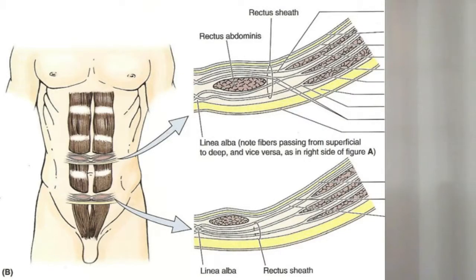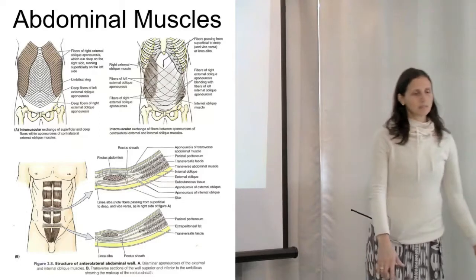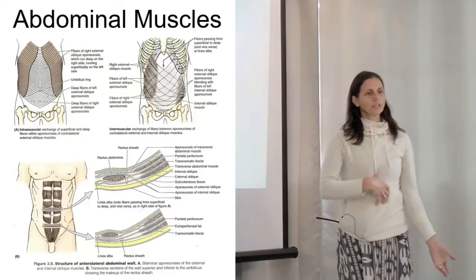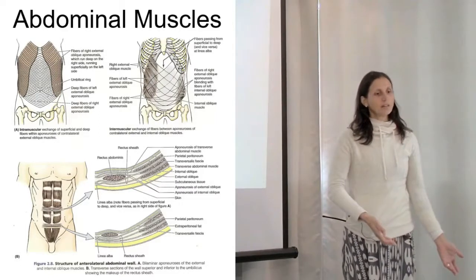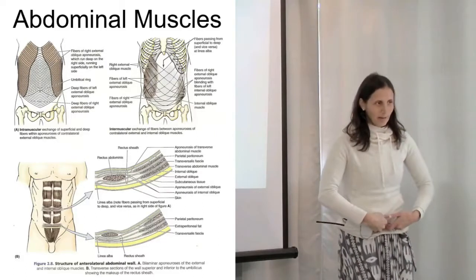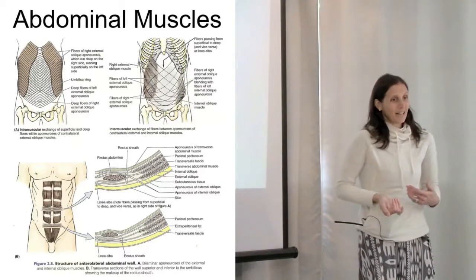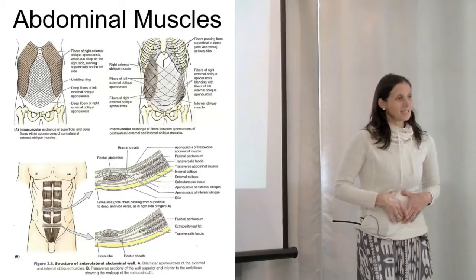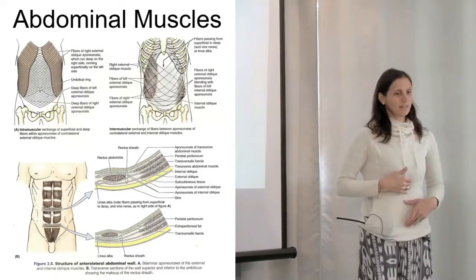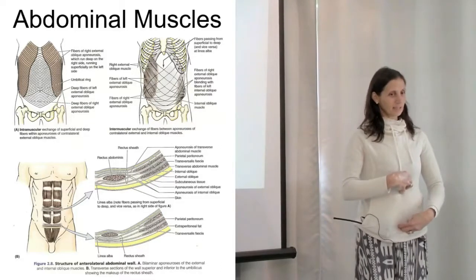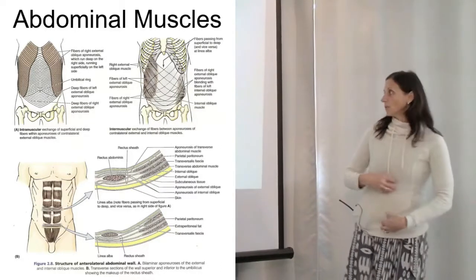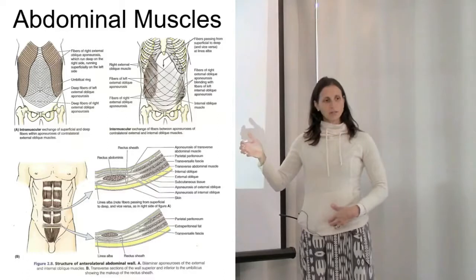Its action is flexion - forward flexion of the trunk or flexion up of the pelvis. When people are tucking and flattening, rectus is active, more active than if they're in neutral where it's more relaxed and stretched.